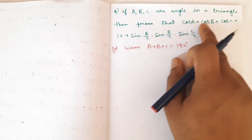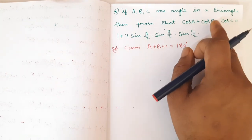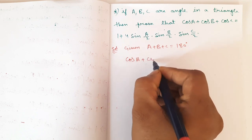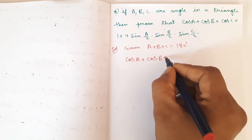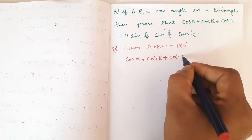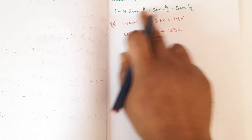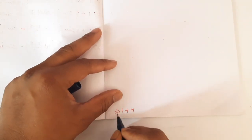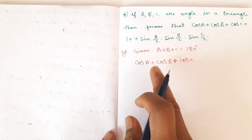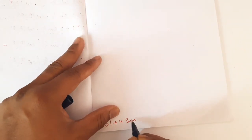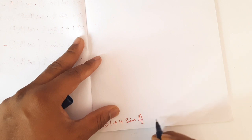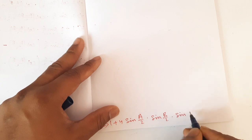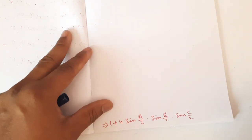Prove that — the question is this equivalence. LHS is: cos A plus cos B plus cos C equals 1 plus 4 times sin(A/2) times sin(B/2) times sin(C/2).